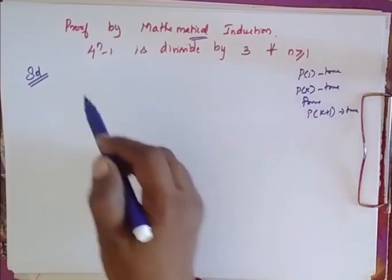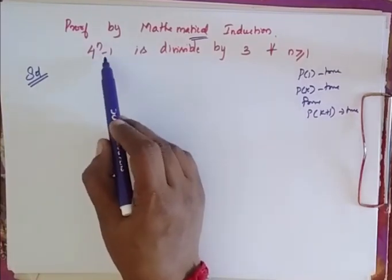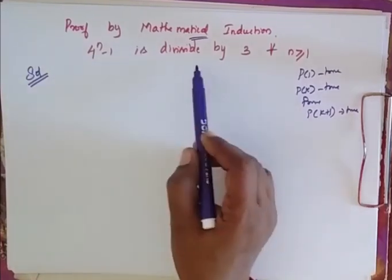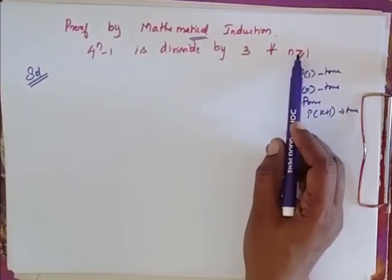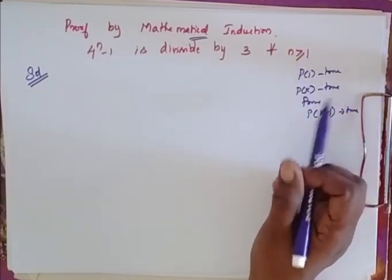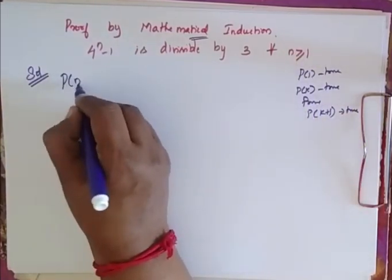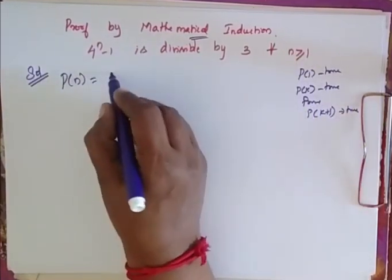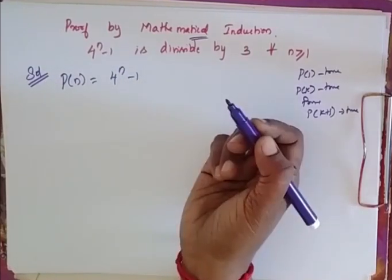Now we have the problem: 4 power n minus 1 is divisible by 3, for every n greater than or equal to 1. I consider P of n as 4 power n minus 1.